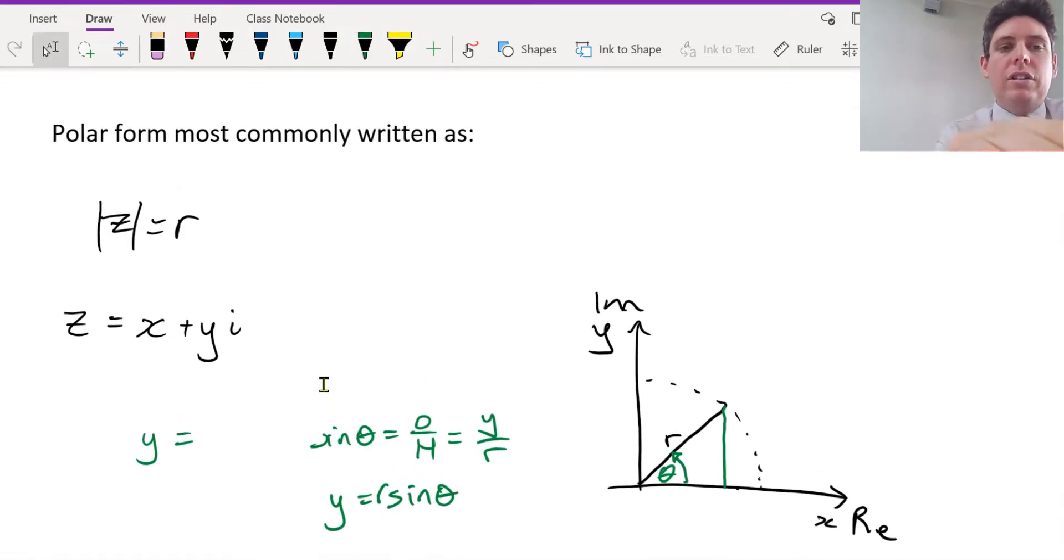Yeah, so if you follow the same process, this x value, instead we're using cos theta. So x can be written as r cos theta.